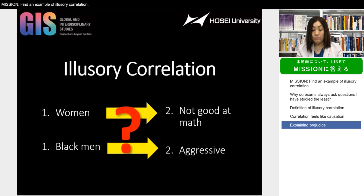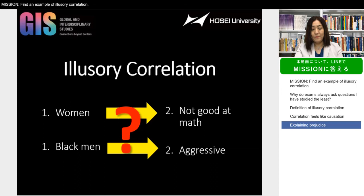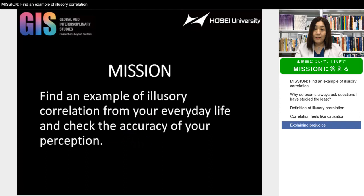I'm sure you quickly realize that there are many examples of men who are poor at math, and a large number of white men who are aggressive and Black men who are not aggressive. We often believe in things that are not real. So be aware of the various tricks that your mind plays on you. Don't trust your instincts — trust science. Psychology is a scientific study of the human mind. Please try the mission. Thank you.